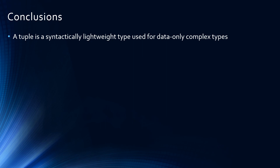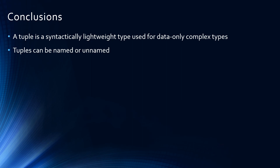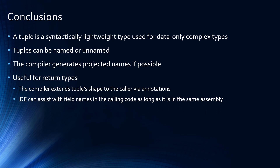So a tuple is syntactically a lightweight type that's used for data-only complex types — no methods, no properties. Tuples can be named or unnamed. You can explicitly name the fields, or you can let the fields be named by the variables used to initialize them, called a projection. This is very useful for return types, and what's really cool about it is that the compiler includes metadata or annotations in the tuple's definition so that the calling code can know what the field names are. And the IDE, Visual Studio, can also provide assistance by auto-suggesting the names of the fields because they're included in an annotation.